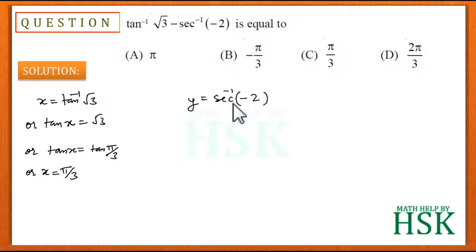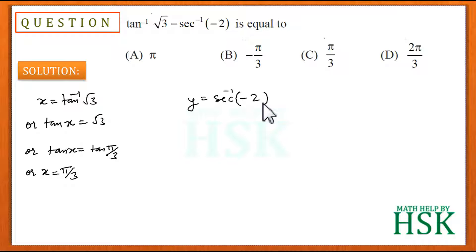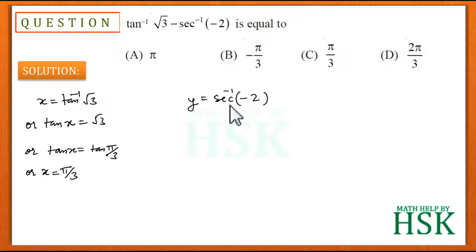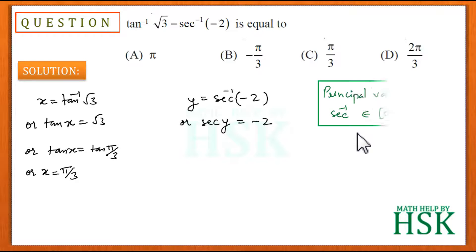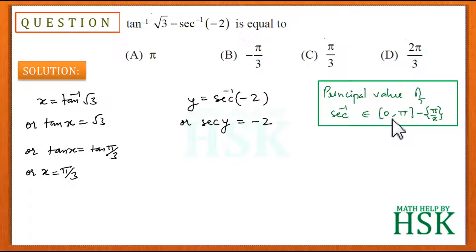Now for sec⁻¹(-2), I assume it equals y, so y is the principal value of sec⁻¹(-2). Since the value is negative — unlike tan⁻¹(√3) where the value was positive — I need to consider the principal value interval for sec⁻¹, which is [0, π] excluding π/2.